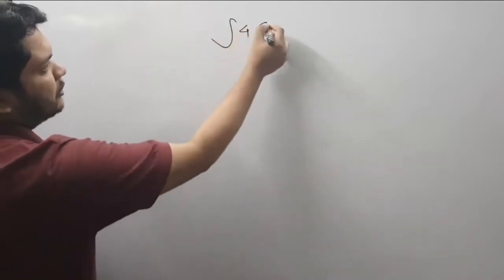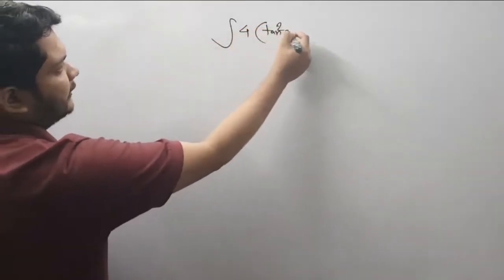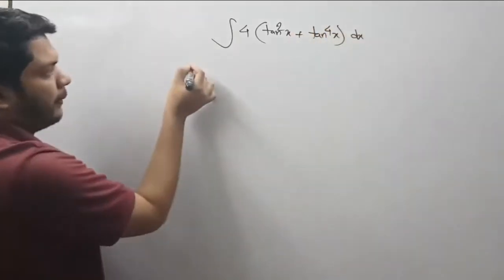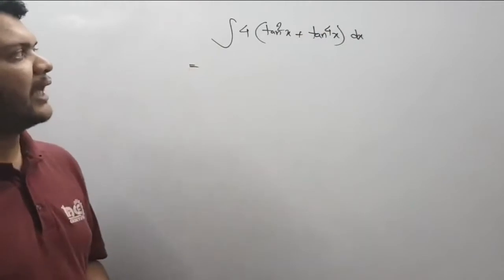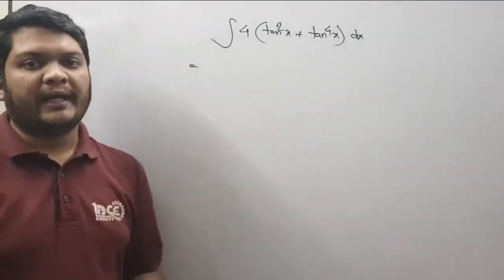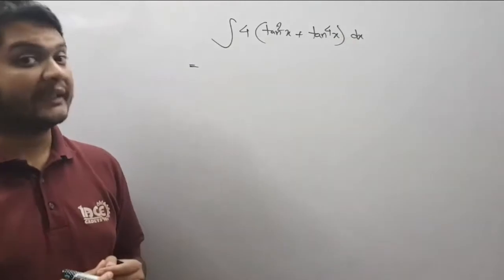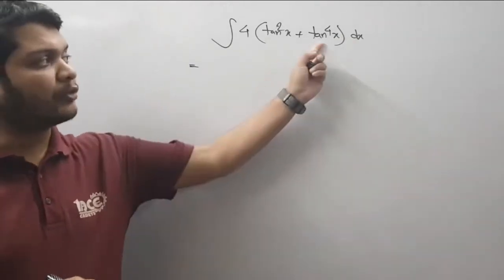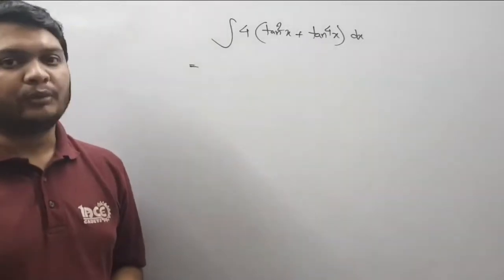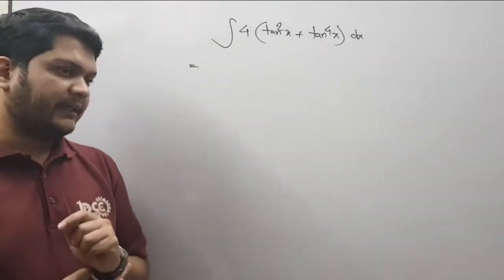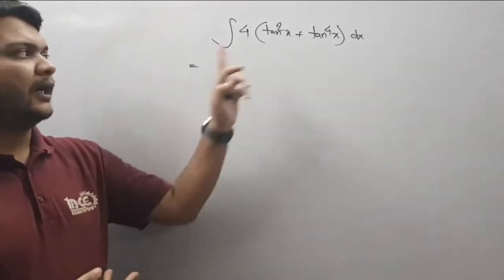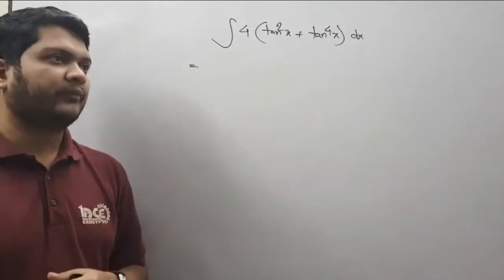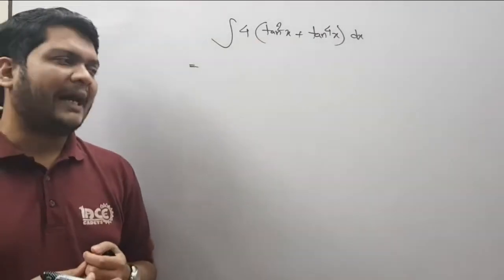Integration of 4 times 10 squared x plus 10 to the power 4x dx. Okay, we will solve this problem and we will learn how to solve this. We should have minus 10 to the power and we will reduce 10 to the power, so we will cancel this problem.